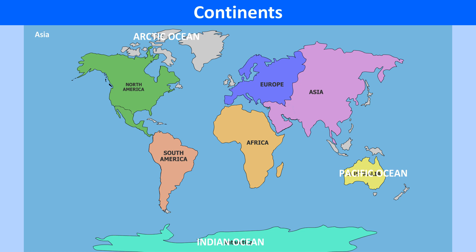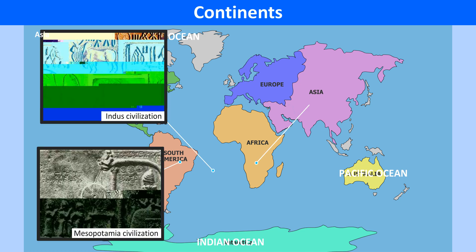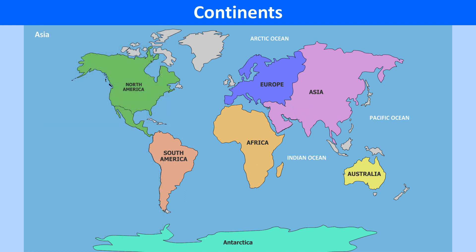Some of the world's longest rivers, such as the Yangtze, Euphrates, Indus and Ganga, as well as deserts such as Gobi and Thar, are in Asia. It also has the highest population among all the continents. Ancient civilizations of the Indus Valley, China and Mesopotamia thrived here. This continent lies in the eastern hemisphere.